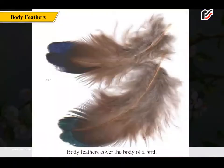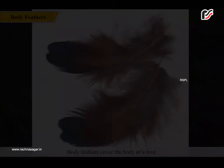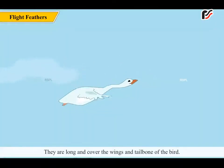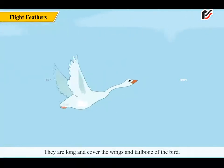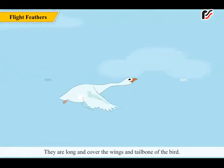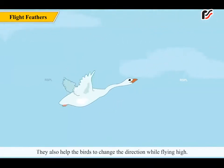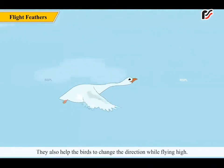Body feathers cover the body of a bird. The feathers that help the birds to fly are called flight feathers. They are long and cover the wings and tailbone of the bird. They also help the birds to change direction while flying high.